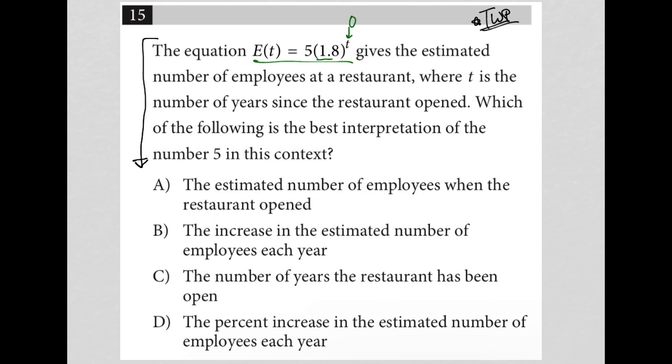1.8 to the zero power is just one, right? Because anything to the zero power is one. Because that's one, now I'd have just five times one here, in which case I'd get E(t) = 5.